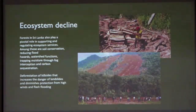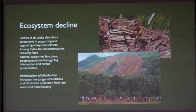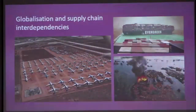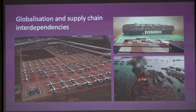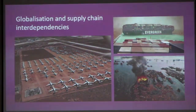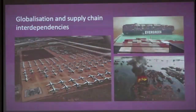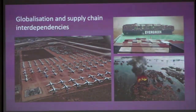We can also look at other major drivers, such as ecosystem decline — deforestation is a contributor to things like landslide risk. And there are globalisation and supply chain interdependencies: individual events like the tsunami which devastated Japan had huge implications for car supply chains that took many months to resolve. We also saw huge supply chain disruption in COVID-19, and events like the Suez Canal blockage can change supply chains around the world, potentially disrupting your medical supplies.